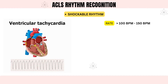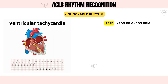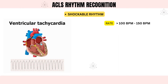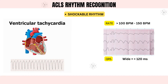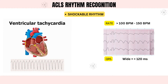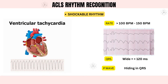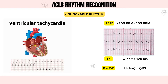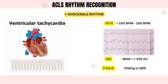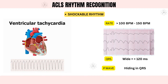Ventricular tachycardia can sometimes cause blood to cease flowing through the body, which is recognized by an abnormally wide and bizarre QRS complex morphology. Normally, P waves are present but are hidden inside the QRS complexes, so they are not visible on an ECG monitor. QRS duration is longer than 120 milliseconds, meaning the QRS is widened.